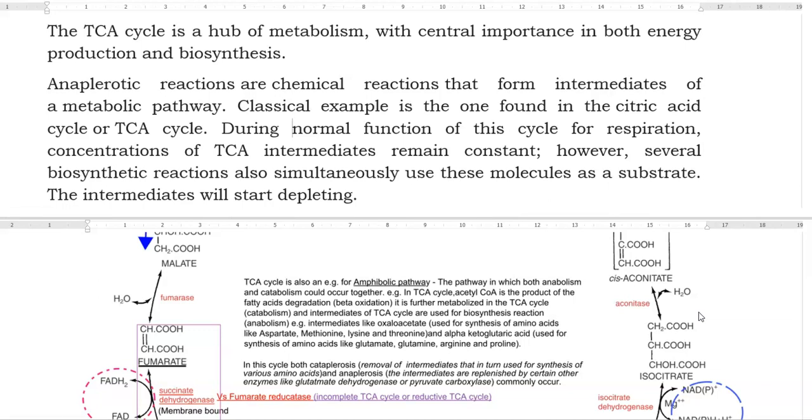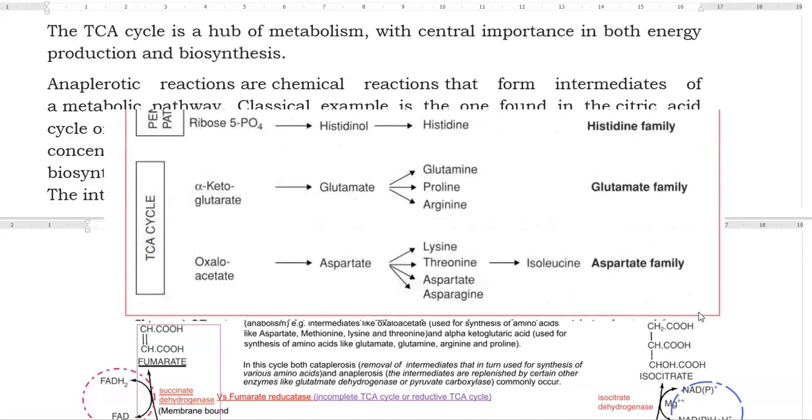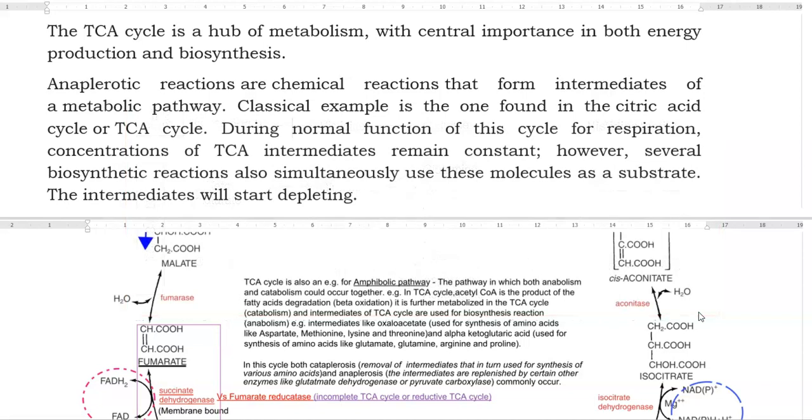However, several biosynthetic reactions that also occur in the cell simultaneously try to use certain molecules as a substrate. That is, certain intermediates of the TCA cycle can be taken up for biosynthetic reactions. As a result, the intermediates will start depleting.